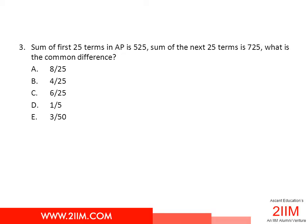The sum of first 25 terms in an AP is 525, sum of the next 25 terms is 725, and the question asks us to find the common difference. Straightforward enough question, let's go on to see how it's solved.